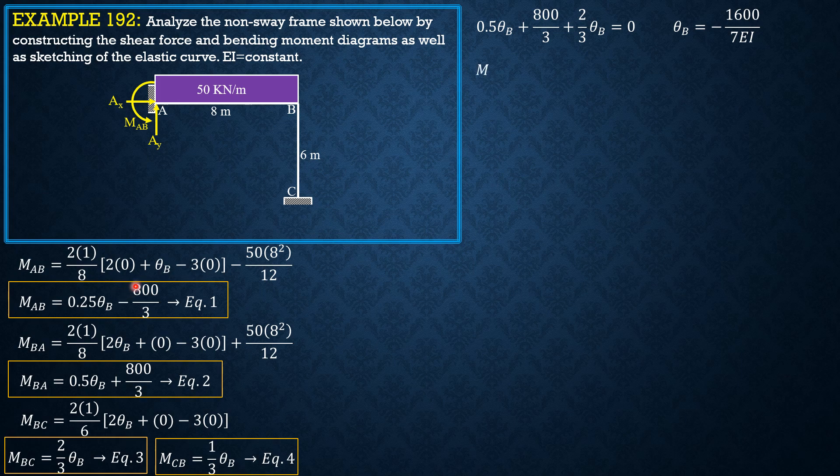Having found θB, we can now compute the moments. MAB equals 0.25 times negative 1600 over 7 minus 800 over 3. So MAB is negative 323.810 kilonewton-meters.